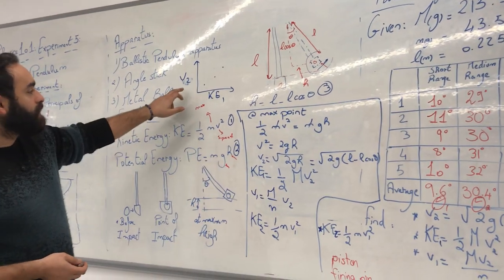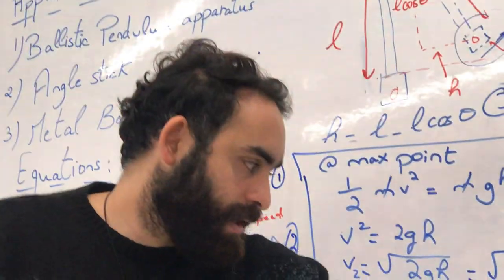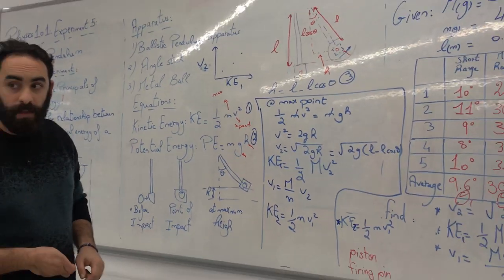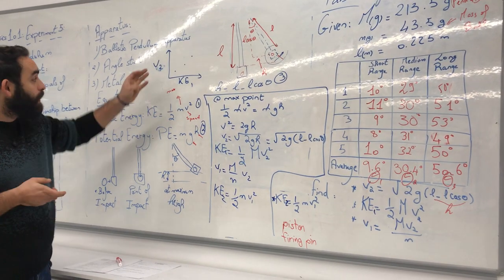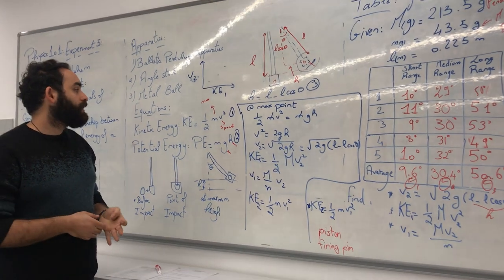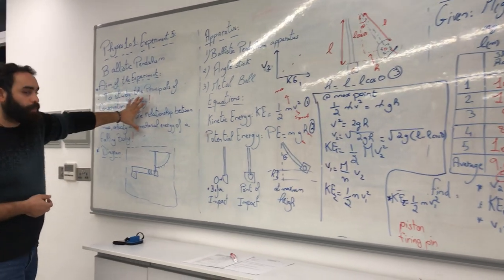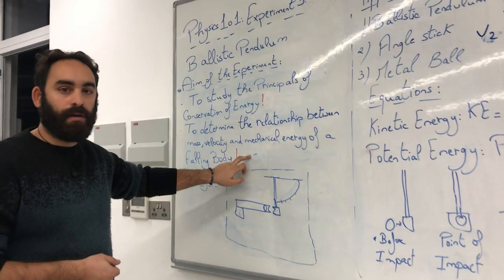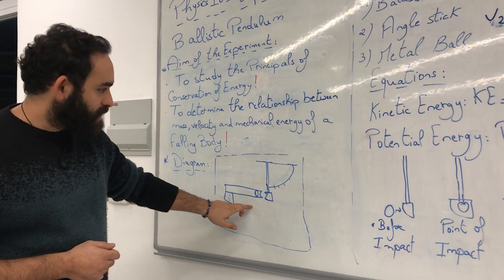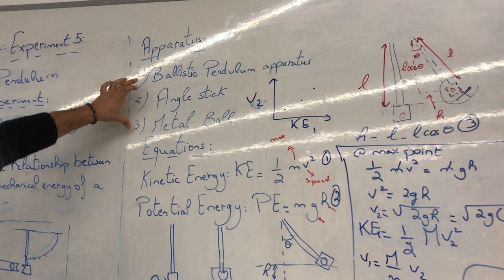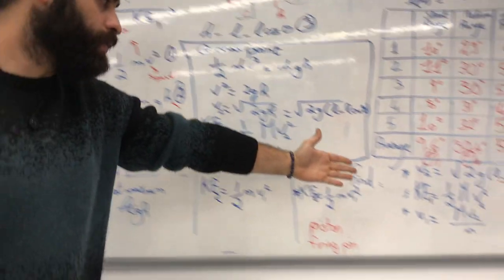After calculations, you will produce a graph of V₂ versus KE₁. The graph should be drawn on paper — no Excel, no digital tools — with your name and student number on it. For the equations section of your report, include these equations. The apparatus should list the three items. Make sure everything in the report matches what was shown: aim word for word with exclamation marks, the same diagram drawn by hand, and the correct calculations.